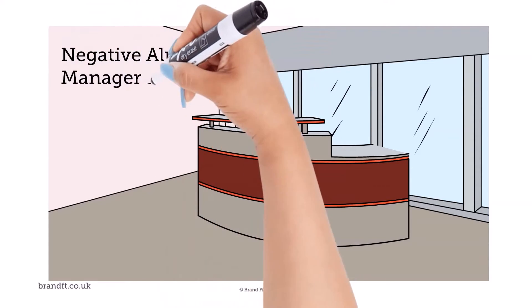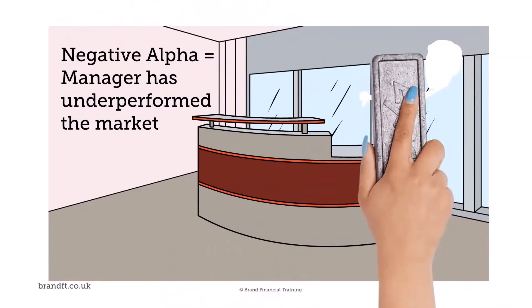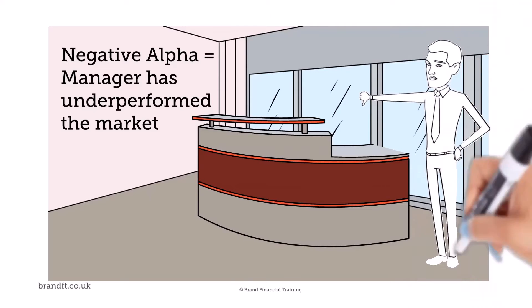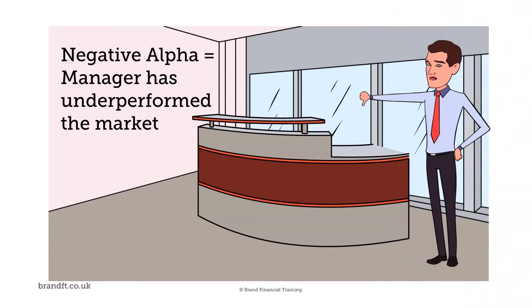A negative alpha indicates that the manager has underperformed the market after adjusting for the risk factor, which is the beta figure. If the figure had been positive, that would tell us that the manager has outperformed the market and has added value on a risk-adjusted basis.